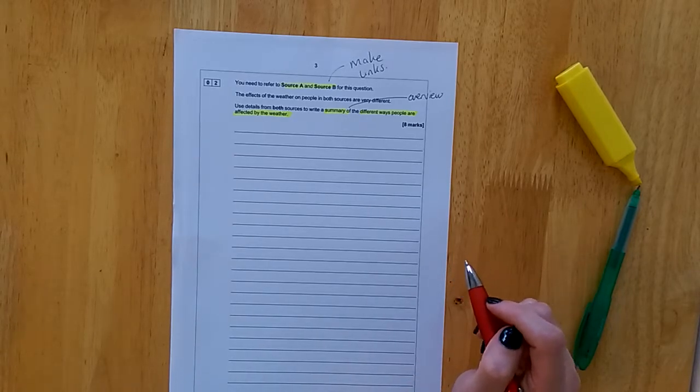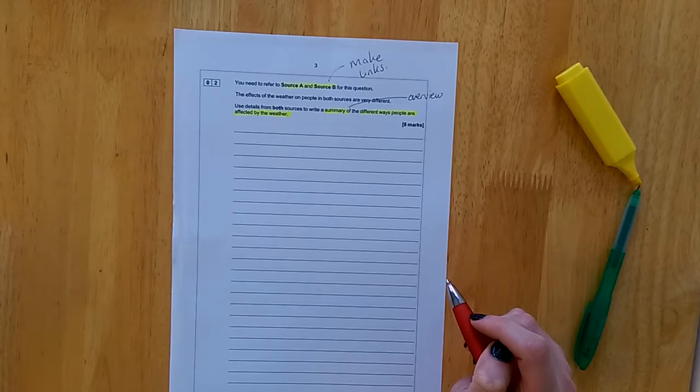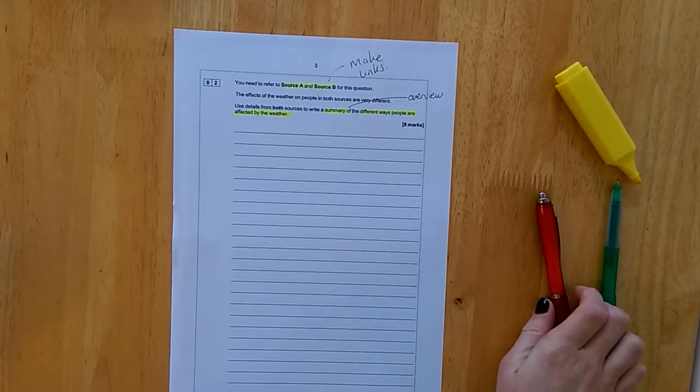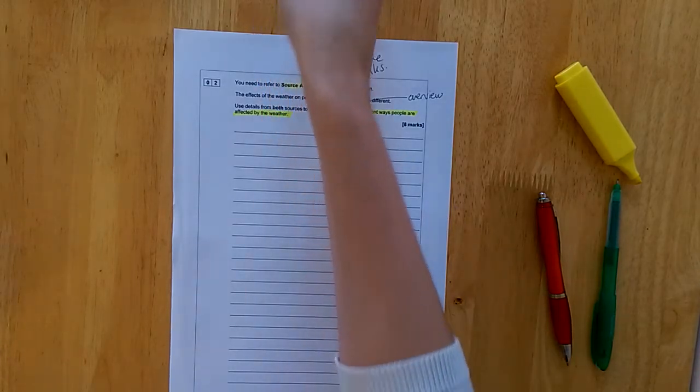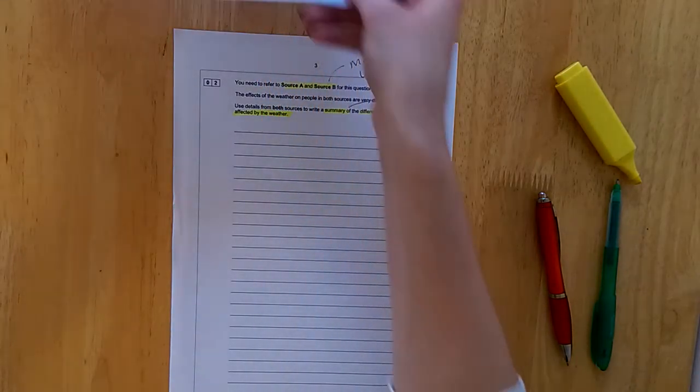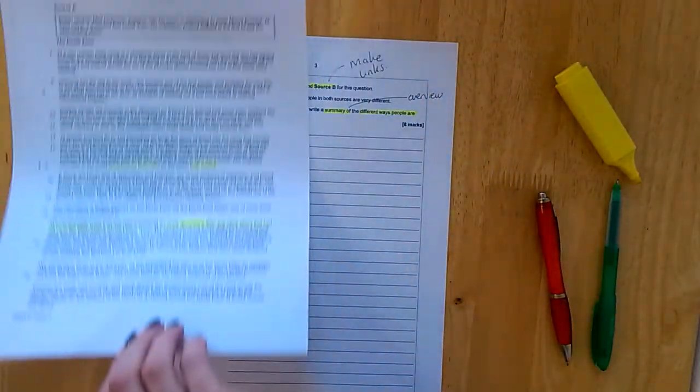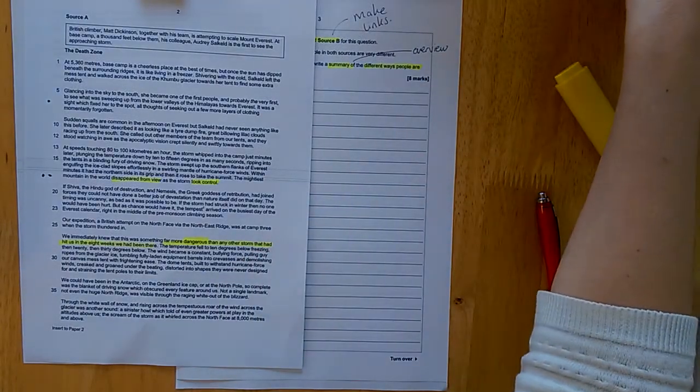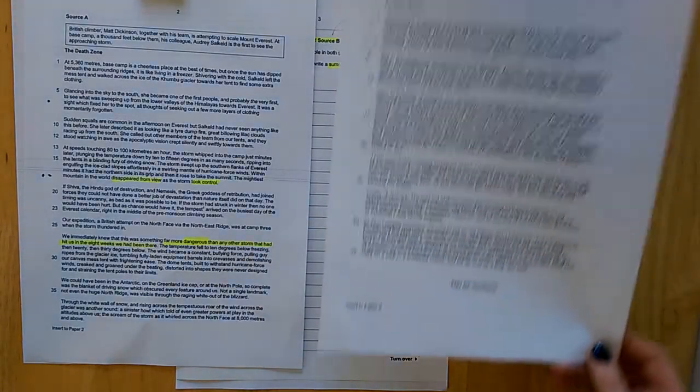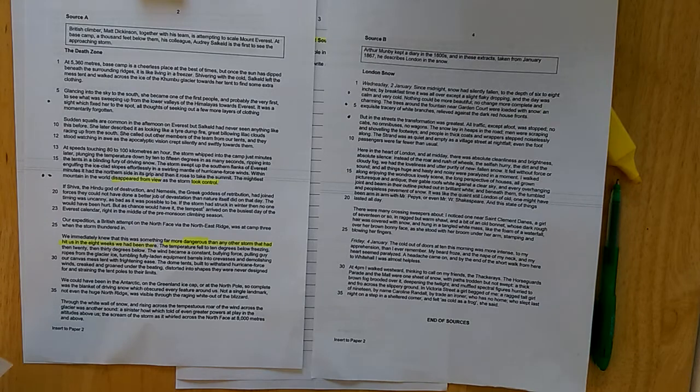You will already be making links because you've already read the text. So you'll already know that in text A, the storm is very life-threatening and fatal. Whereas in source B, the effects of the snow in London are more peaceful. We will also need inference for question 2. So we need to be able to say what the text suggests about weather and natural environments.